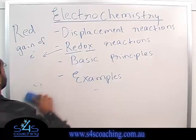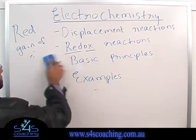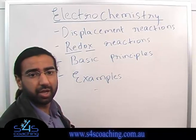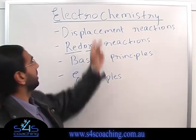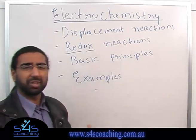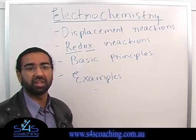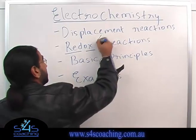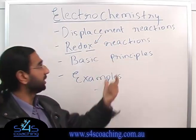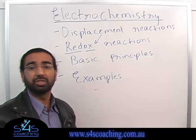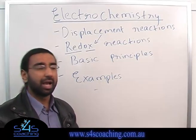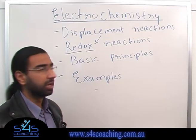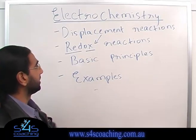So moving on from redox reactions to displacement reactions. The displacement reactions are the basic principle behind the construction of a galvanic cell. Displacement reactions are essentially redox reactions in which one of the products is displaced from a solution as a separate phase — usually a solid, a liquid, or a gas. They happen with metals.